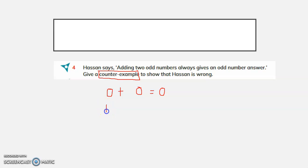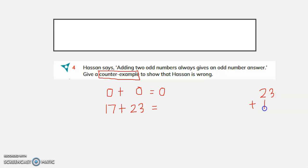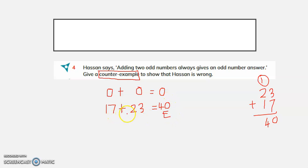Let us take two odd numbers: 17 and 23. When you add 17 and 23, the sum is 40. 3 plus 7 is 10, carry 1; 1 plus 2 plus 1 is 4, giving 40. 40 is an even number. So this shows that adding two odd numbers gives you an even sum.